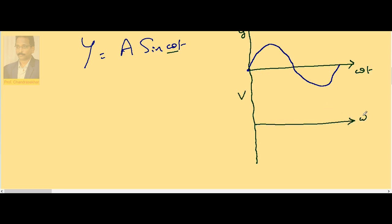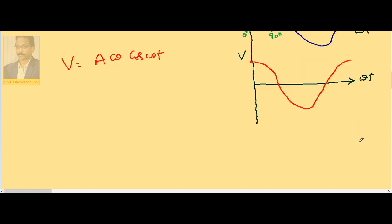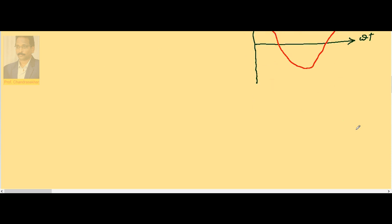Now plotting the velocity graph with velocity on the y-axis and ωt on the x-axis. Since v = aω cos(ωt), at ωt = 0 cos 0 = 1, so the graph starts from maximum velocity. At 90° cos 90° = 0, so velocity becomes 0. At 180° it reaches maximum again, at 270° it becomes 0, and at 360° it reaches maximum. This is the variation of velocity with angular displacement or time.